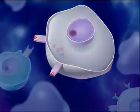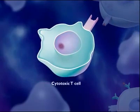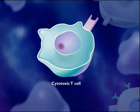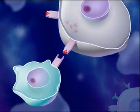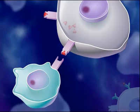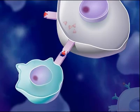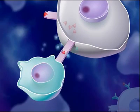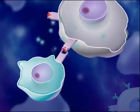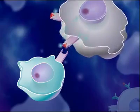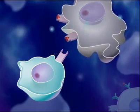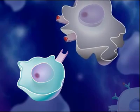The body makes millions of different types of cytotoxic T-cells, and each type is able to recognize a particular antigen. The cytotoxic T-cells that are capable of recognizing the antigen displayed on the surfaces of infected cells bind to those infected cells and produce chemicals that kill them. Death of the infected cells results in destruction of the pathogen.